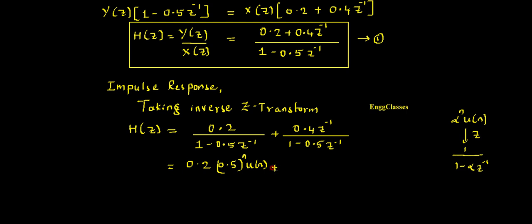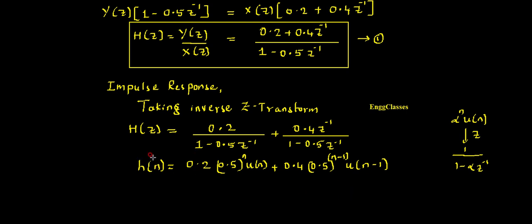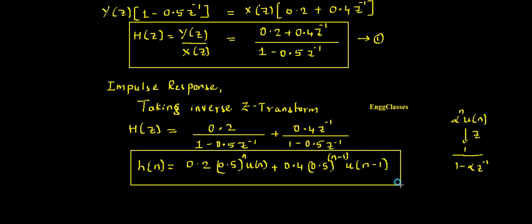The second term 0.4·Z⁻¹/(1 − 0.5·Z⁻¹) also maps to (0.5)ⁿ·u(n), but due to the Z⁻¹ in the numerator — by the time shifting property — N is replaced with N−1. So the second term gives 0.4·(0.5)^(n-1)·u(n−1). Therefore the impulse response is: h(n) = 0.2·(0.5)ⁿ·u(n) + 0.4·(0.5)^(n-1)·u(n−1).